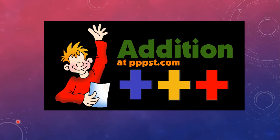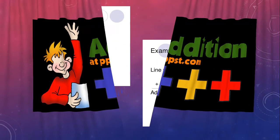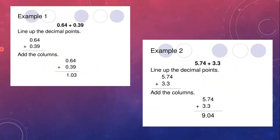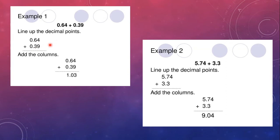We will now learn how to do addition of decimal numbers. Two examples are given. The first example says add 0.64 and 0.39, and the second example says add 5.74 and 3.3. Line up the decimal points — after the decimal, you have to make their places equal. For 0.64 and 0.39, we have already lined them up.